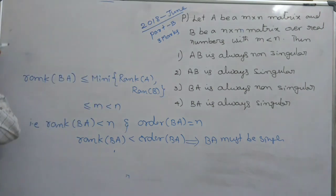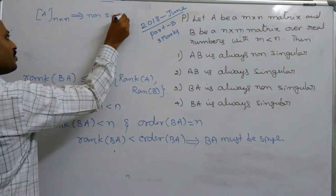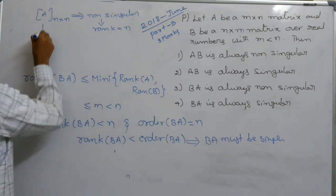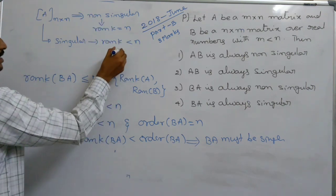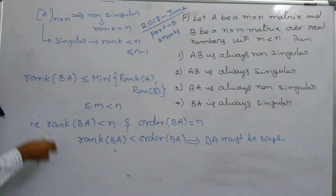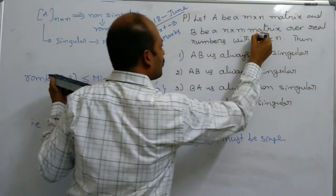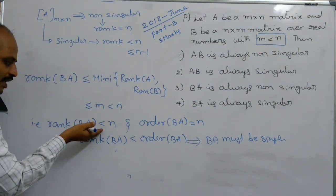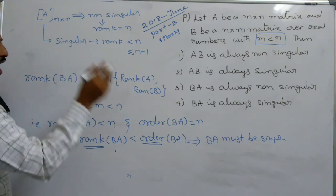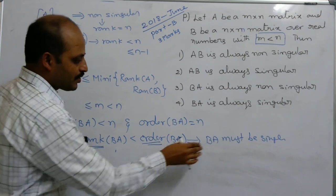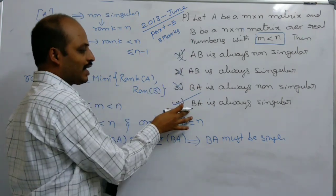So to summarize: if a matrix of order n×n is non-singular, its rank equals n; if it is singular, its rank is less than n. Here, rank(BA) ≤ minimum of rank(A) and rank(B), and since m < n, rank(BA) < n while the order of BA is n×n. Therefore BA must be singular. Option number 4 is correct — this is the part B question and only one correct option exists.